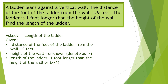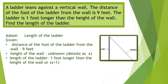To visualize the problem, I have here an illustration of a ladder that leans against a wall. The distance of the foot of the ladder from the wall is 9 feet, the height of the wall is x, and the length of the ladder is x plus 1. As you can see from the illustration, the wall is perpendicular to the base, and so Pythagorean theorem is applicable.